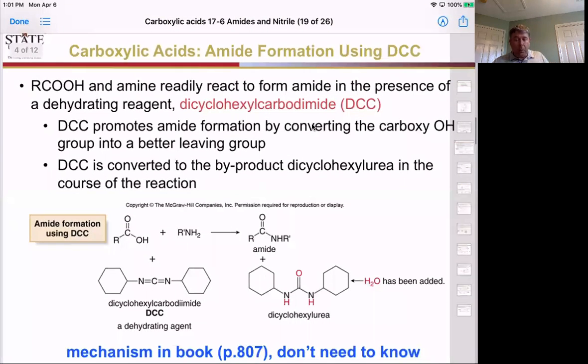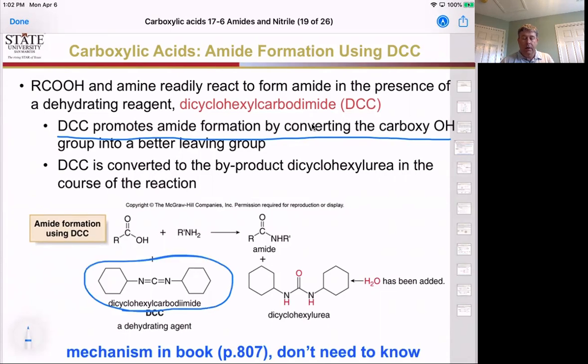We can also use another compound called DCC, which is dicyclohexyl carbodiimide. So a carbodiimide is a derivative of a carboxylic acid made out of carbonic acid in which it can liberate an equivalent of an amine. So let's look at what we have here. We can promote an amide formation by converting the carboxylate OH to a better leaving group. So in the presence of DCC, notice here it looks kind of like a nitrile right here.